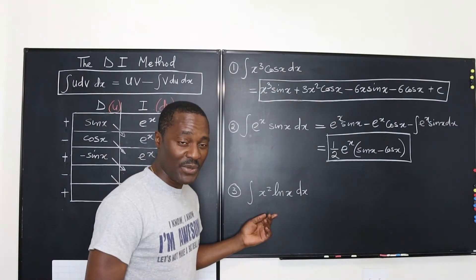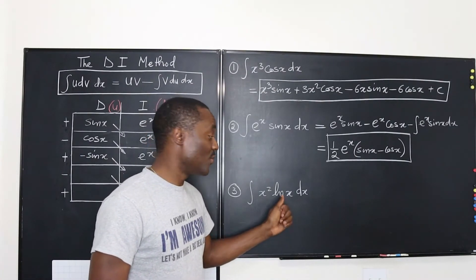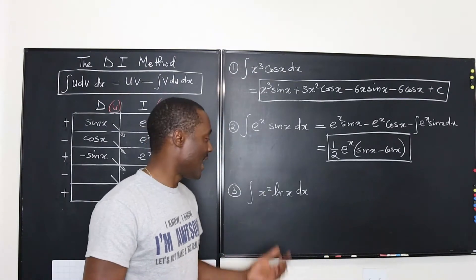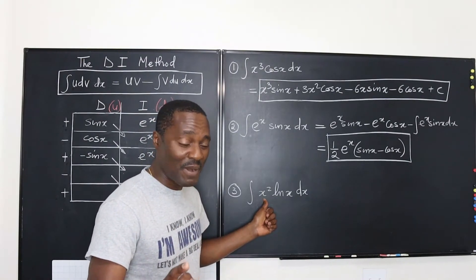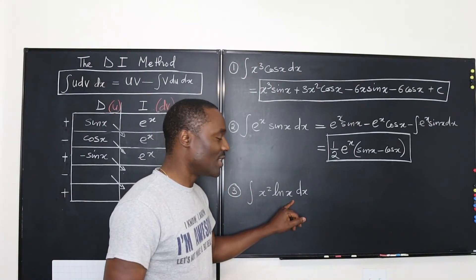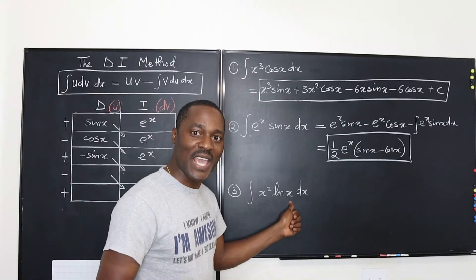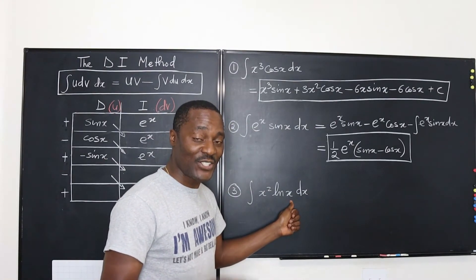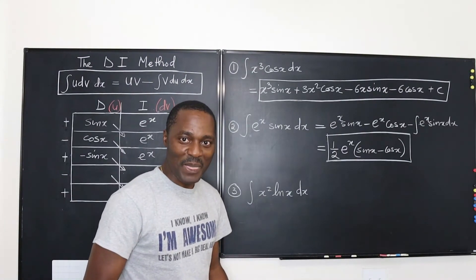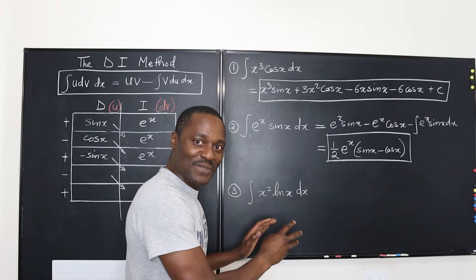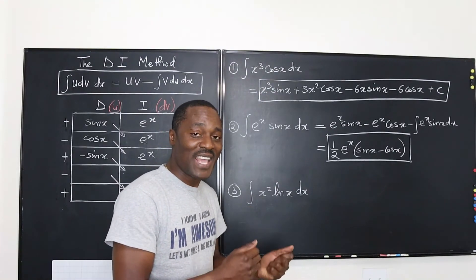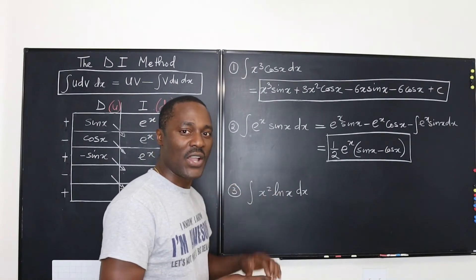In the case of the third example, you have a polynomial and a natural log function. Because you cannot integrate the natural log function, you must choose it as what to differentiate, and you keep integrating the polynomial. The beautiful thing about natural log functions is that as soon as you differentiate, the natural log disappears and you start having rational expressions. Remember that the derivative of ln of X is one over X — the ln thing goes away and you can just move on.